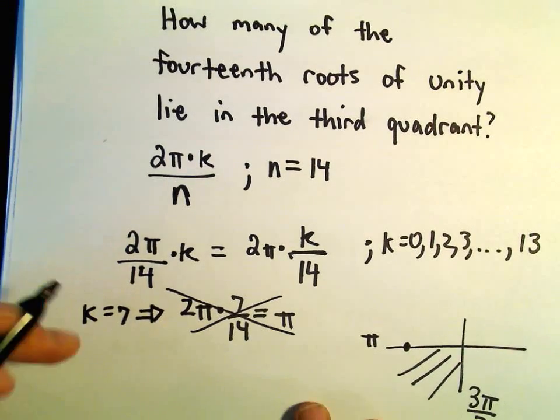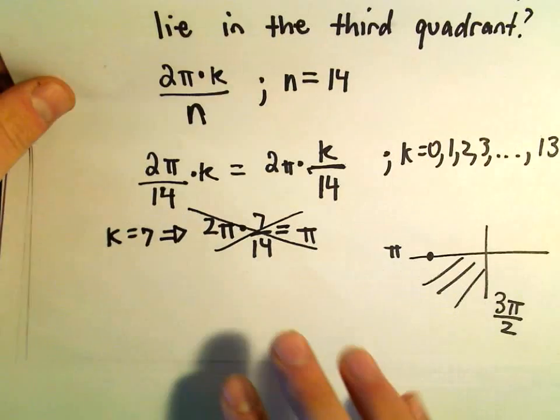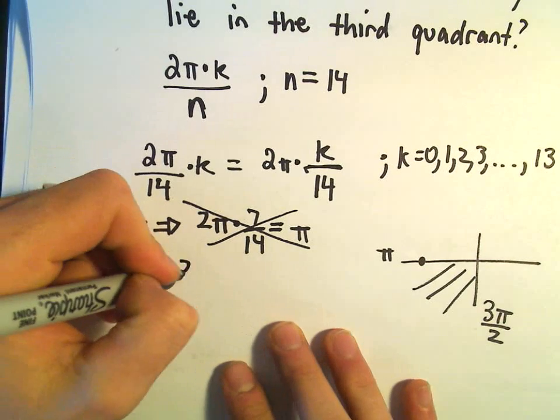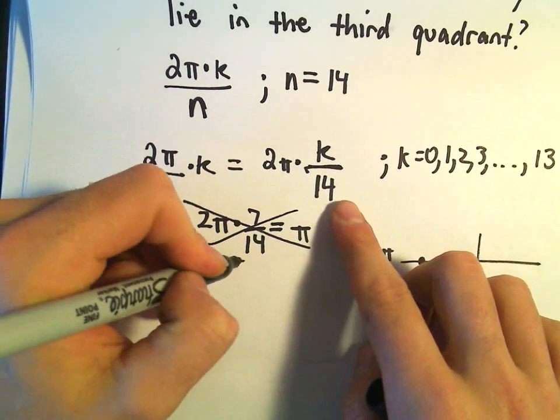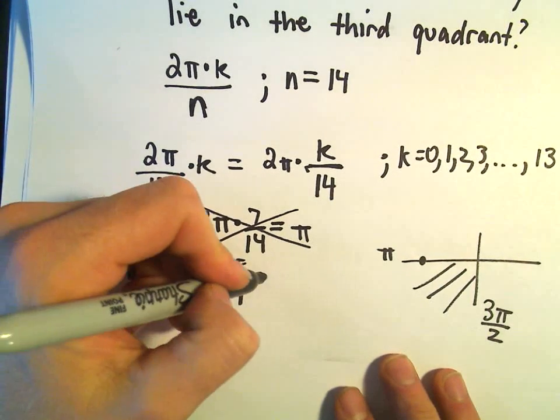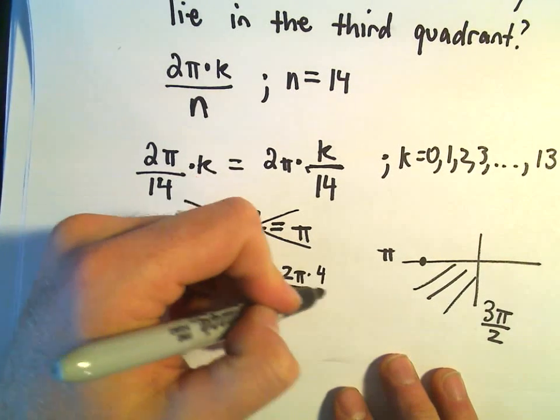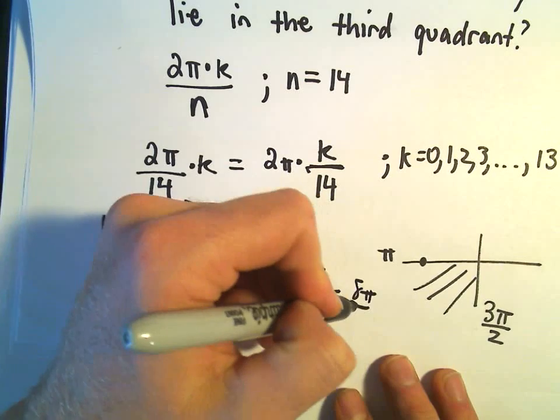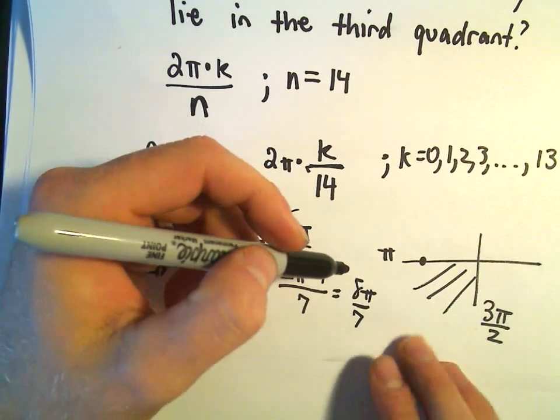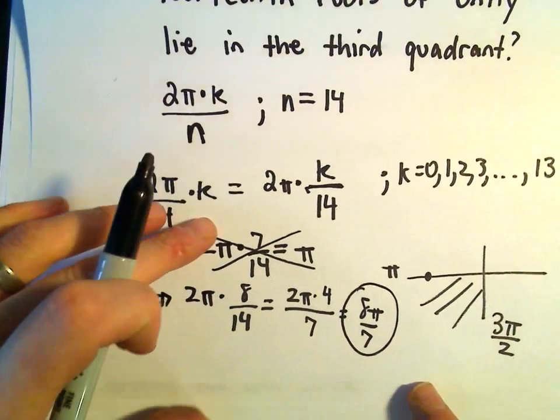Let's see. k equals 8. I believe that one would certainly work, because if we let k equals 8, we'll get 2π times 8 over 14. So 8 over 14, if we reduce that, that'll give us 4 over 7. That's going to be 8π over 7, and 8π over 7 is going to be just a little bit bigger than π, so that's certainly going to fall in quadrant 3.